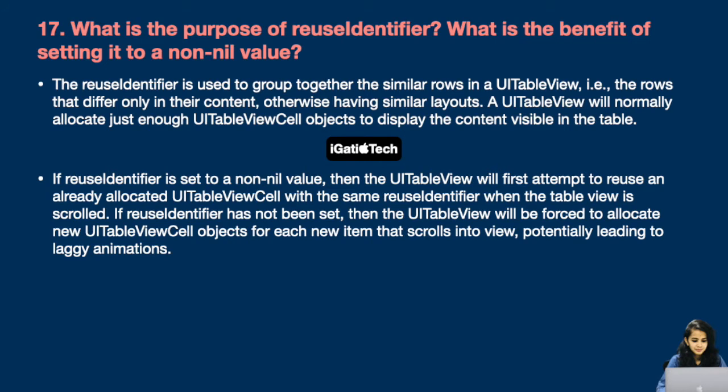If the reuse identifier is set to a non-nil value, the UITableView will first attempt to reuse an already allocated UITableViewCell with the same reuse identifier when the table view is scrolled. If the reuse identifier has not been set, the UITableView will be forced to allocate new UITableViewCell objects for each new item that scrolls into view, potentially leading to laggy animations. So it's better to set it to a non-nil value.